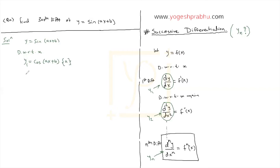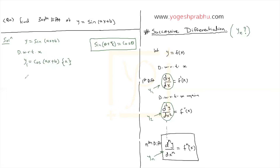Before going to the second derivative, let's find a pattern. We know the formula: sine of (θ + π/2) equals cos θ. Right now we have cos(ax + b), so ax + b is our θ. We'll use this formula and write cos θ as sine of (θ + π/2), converting cos back into sine. So y1 becomes a·sine(ax + b + π/2).